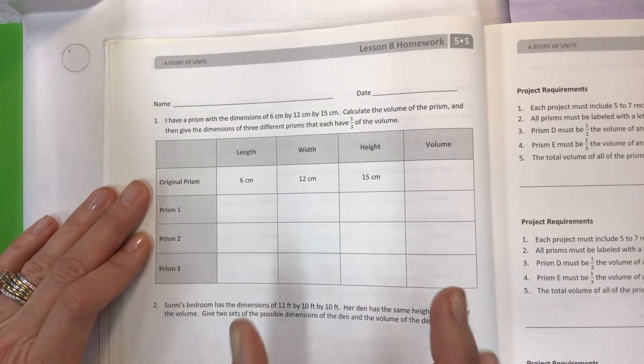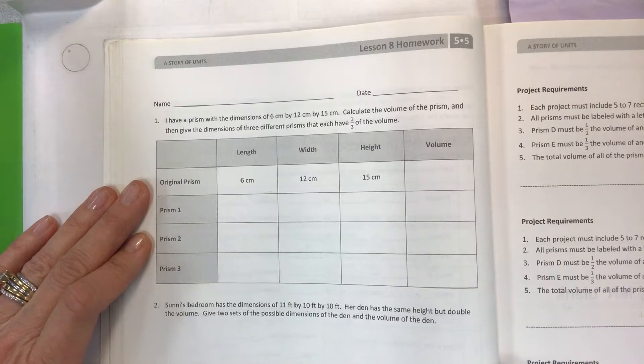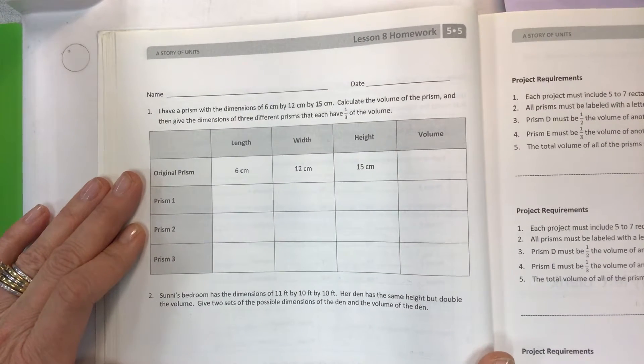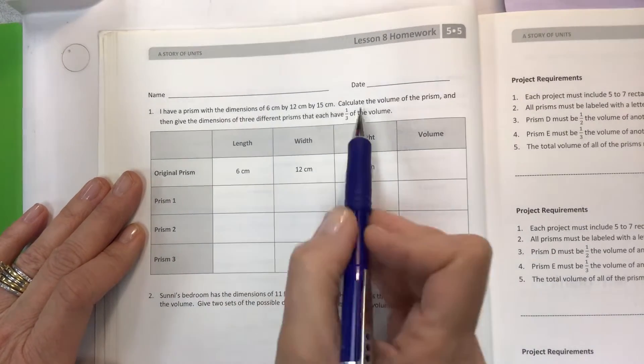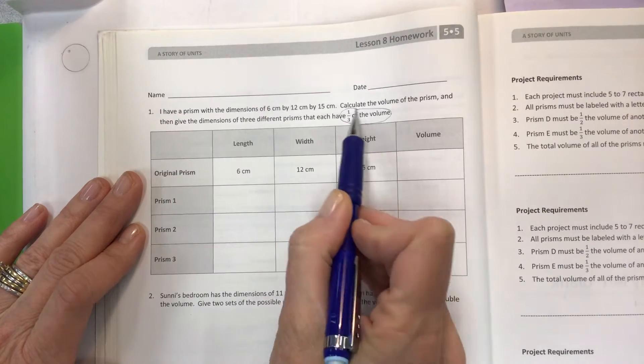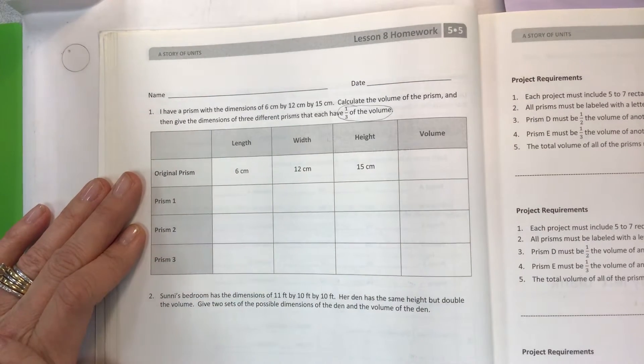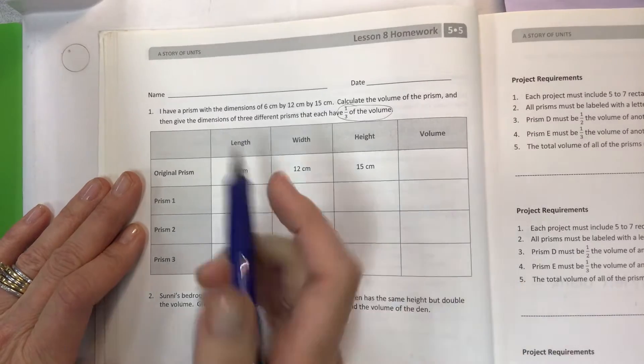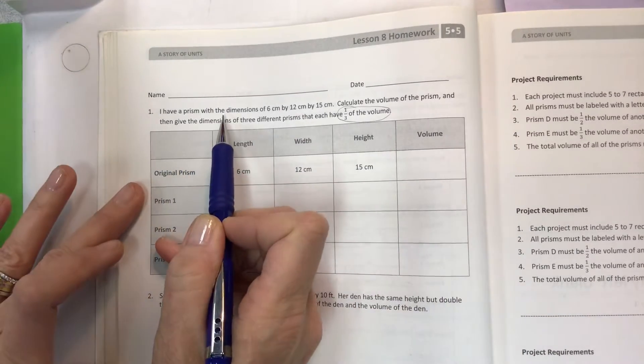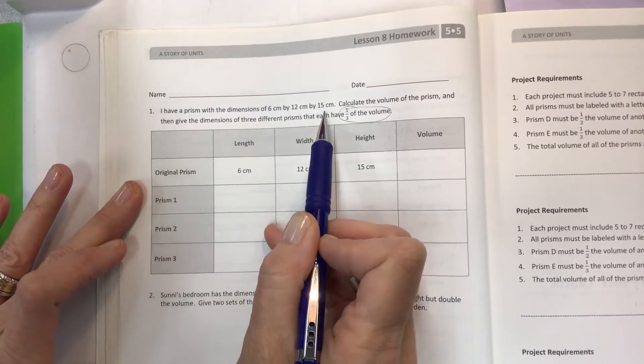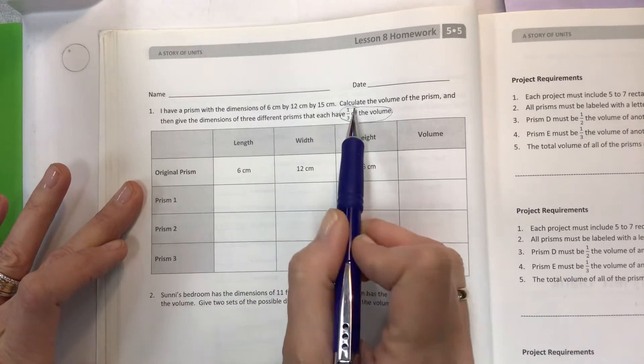You should have already completed it, tried your best, and then this video is just to check your work. But the concept is very important—if you want to change the volume that you have, how can you do that? I have a prism with the dimensions of 6 by 12 by 15 centimeters. Calculate the volume of the prism and then give the dimensions of three different prisms that each have one-third of the volume.